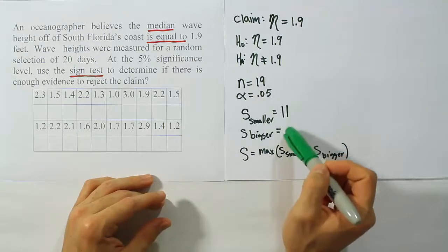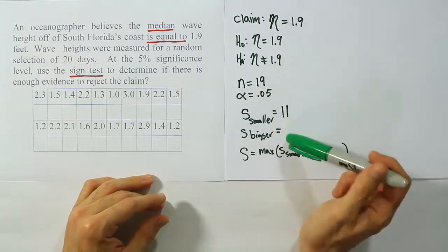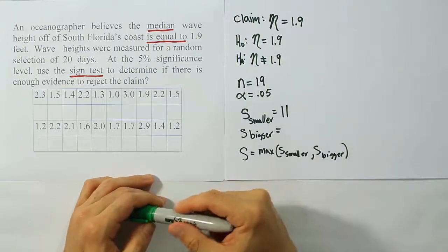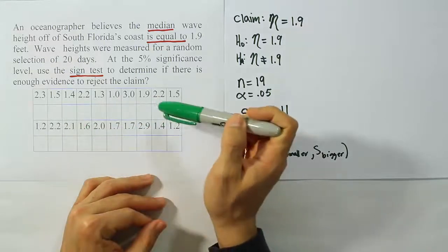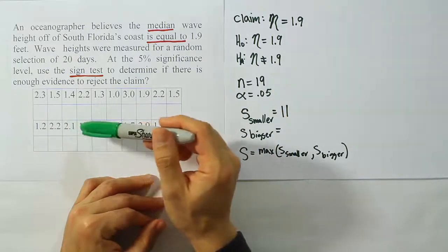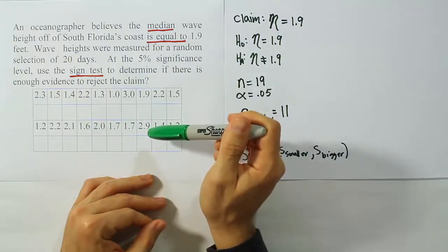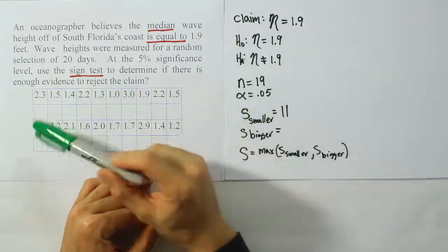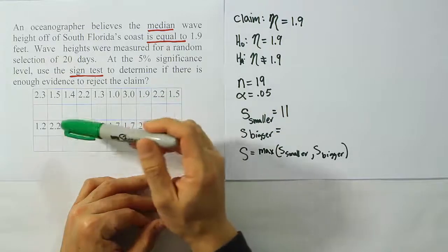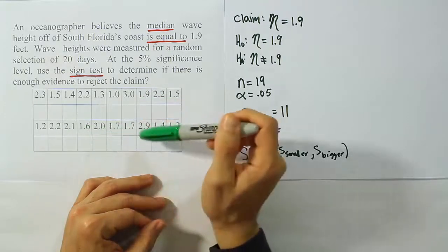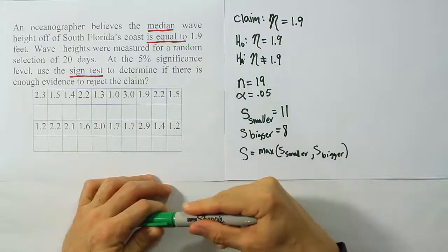This must mean that S bigger is 11 from 19 gives you 8. We should see this to be 8. If it isn't 8, we made a mistake counting S smaller. You can also see why we had to throw out any value equal to 1.9, because obviously 1.9 would not be smaller or bigger. Let's count the number of values that are bigger than 1.9. We see 1, 2, 3, 4, 5, 6, 7, 8. There is in fact 8. First time through I might have miscounted, but it is 8 exactly.